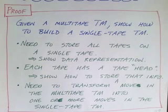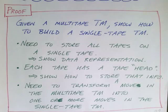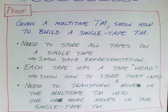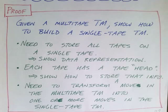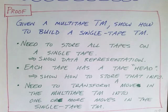Here's the main idea of the proof. It's pretty straightforward but the devil is in the details. Given a multi-tape Turing machine, we're going to show how to build an equivalent single tape Turing machine. In other words, given a Turing machine that takes multiple tapes, we're going to show how you can create a new Turing machine that does exactly the same task using only a single tape.